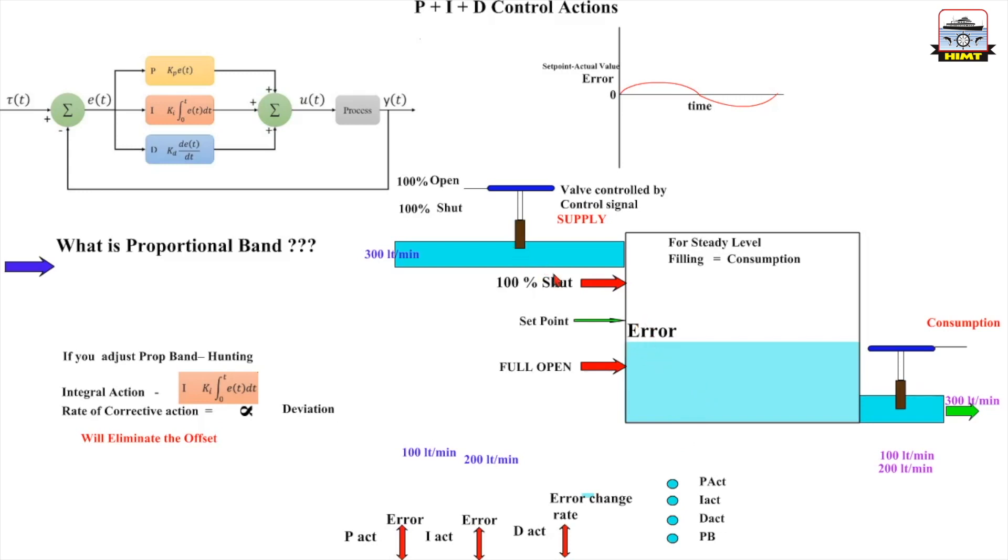Because of the proportional action, the valve started opening and here I got a steady state, but I got an error offset. Now I want to eliminate the offset. How can I eliminate the offset? By making sure that the valve is opening more. This is exactly what the integral action is going to do.